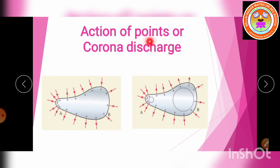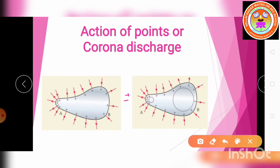This reduction of the total charge of the conductor near the sharp edge is called action at points or corona discharge. The electric field near the edge is very high, ionization takes place, and the charge on the conductor is neutralized and reduced.